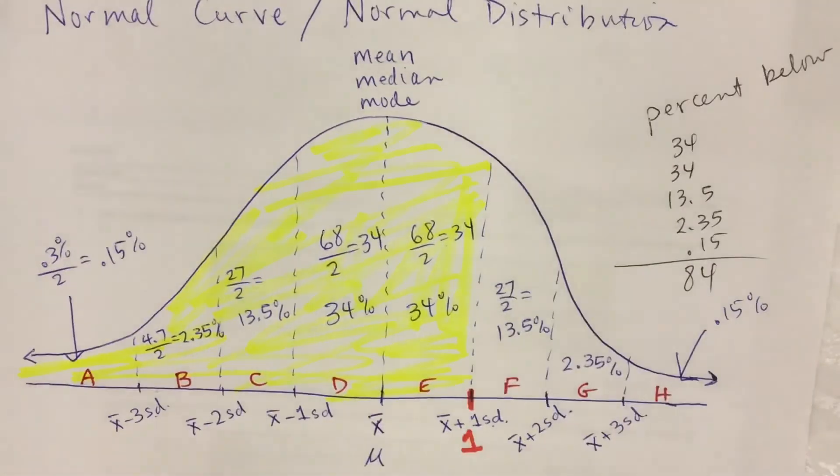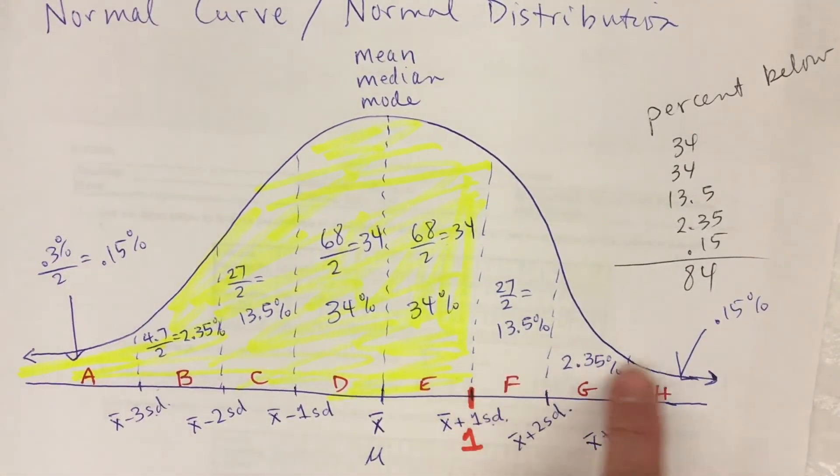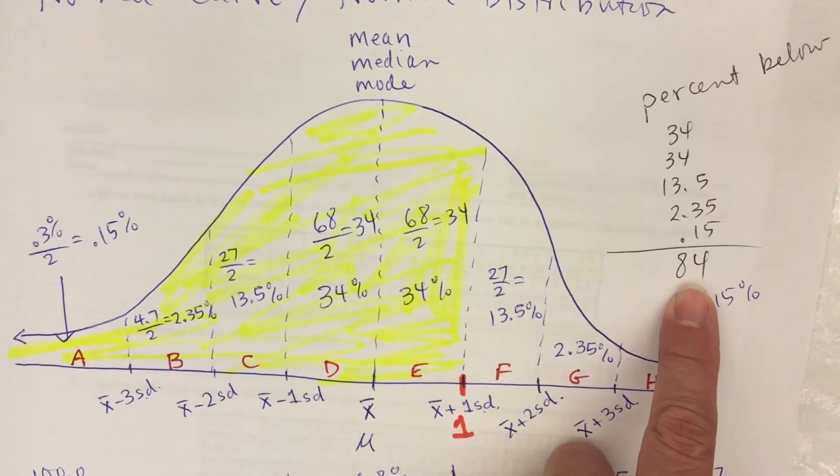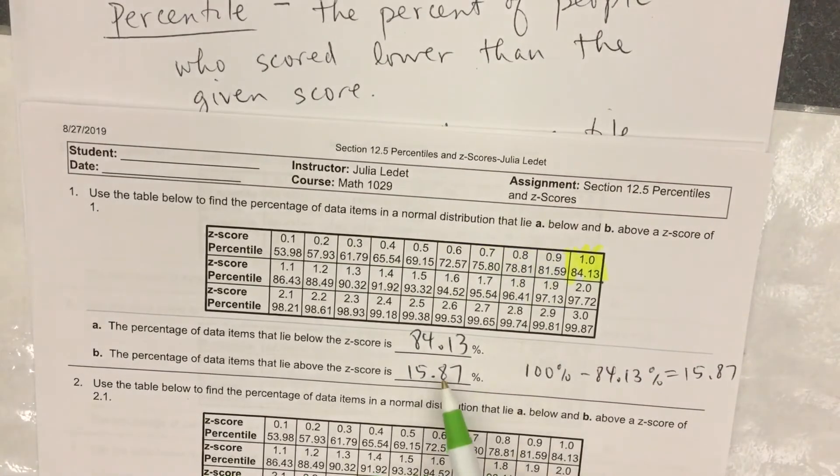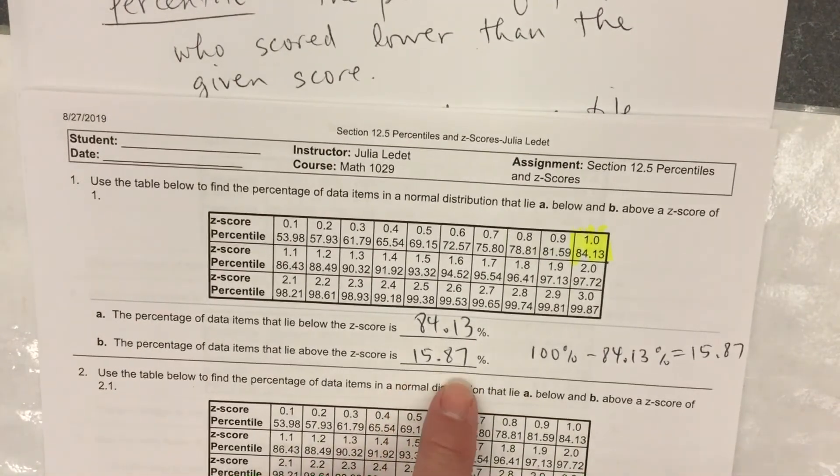Over here, if I want to look at the percent above, I'd say 100 minus 84 is 16. But yet, when I work this problem out, I got 15.87%.